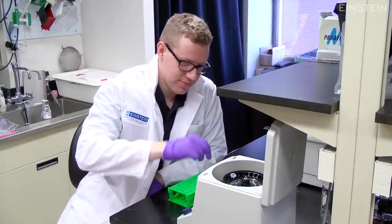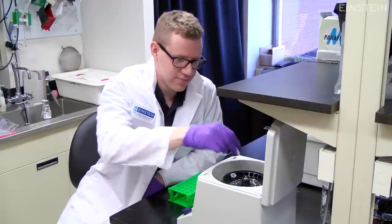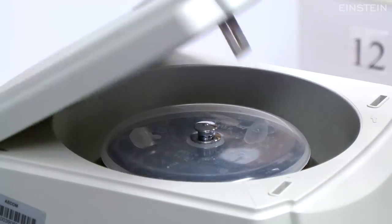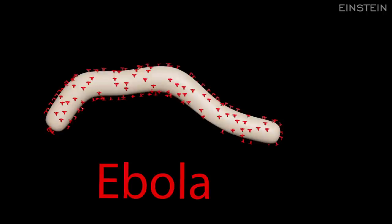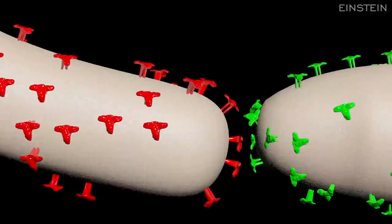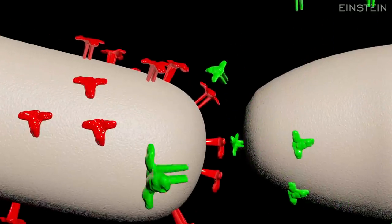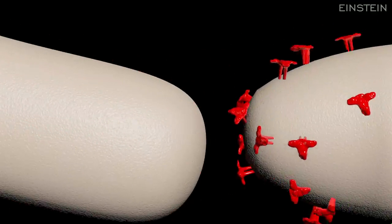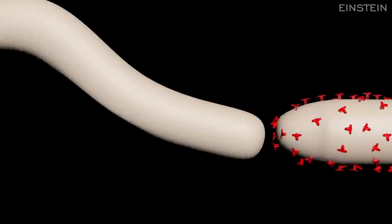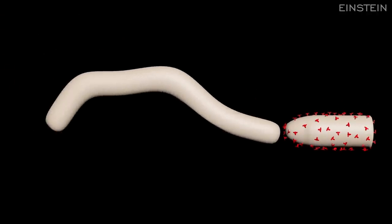So our lab doesn't actually study live Ebola. In order to work with live Ebola, you need these high biocontainment facilities, and there's only a few of them in the world. Instead, we take advantage of the fact that the virus is a highly modular entity. We can take a virus that is not harmful, called VSV, and replace its delivery system, its glycoprotein, with the glycoprotein from Ebola. So it has the Ebola delivery system, but its payload is actually this innocuous genetic material of VSV, sort of like a sheep in wolf's clothing. This is a great system to safely study exactly how Ebola invades cells.